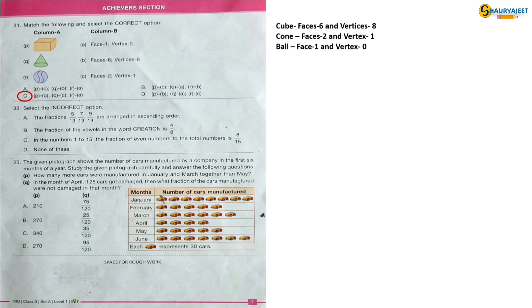Question 32: Select the incorrect option. Option A: The fractions 5/13, 7/13, 9/13 are arranged in ascending order - this is correct. Option B: The fraction of vowels in the word creation is 4/8 - this is also correct. Option C: In the numbers 1 to 15, the fraction of even numbers to the total number is 8/15. No, this is wrong. Total even numbers from 1 to 15 are 7. So 8 to 15 answer is incorrect. So the correct option is option C.